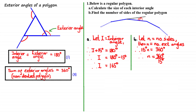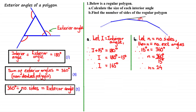We can form the equation: 15 degrees times N equals 360 degrees. Dividing both sides by 15 degrees, we get that N equals 24, and therefore the number of sides is equal to 24. From this example we can form a general equation for all polygons: 360 degrees divided by the number of sides is equal to an exterior angle of the polygon. Let's have a look at the next question.